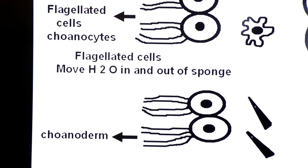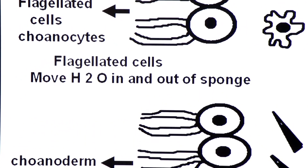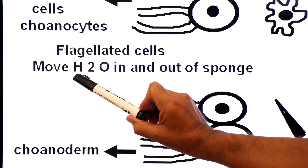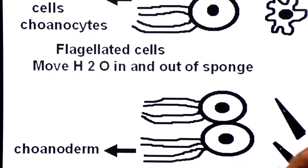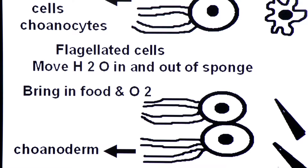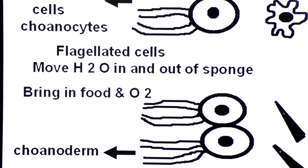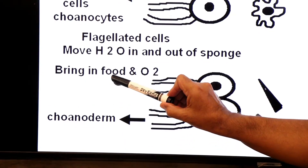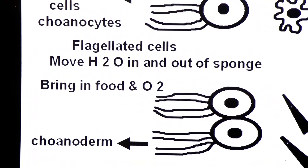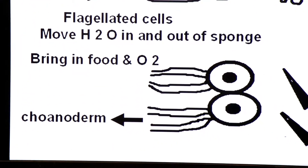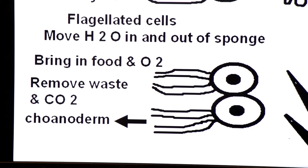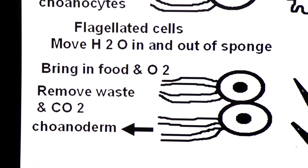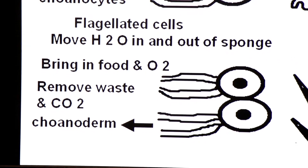The functions of these flagellated cells: first, they move water in and out of the body of the sponge. Second, they bring in food and oxygen to the body of the sponge. Third, they also remove waste products and carbon dioxide from the body of the sponge.